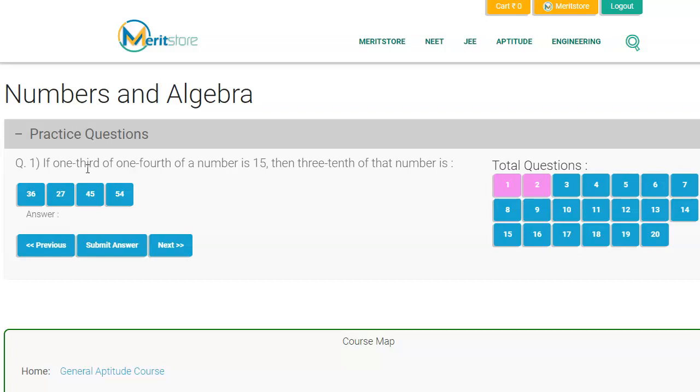So you need to be able to form this into an equation. So how would you do it? 1 by 3 into 1 by 4 into x is equal to 15. That is how you form this equation. So this comes with practice. And for practice, we have given you 20 questions under this chapter of Numbers and Algebra in our course on MeritStore.in.